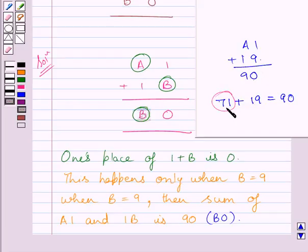90 minus 19 is 71. Now we can solve the puzzle as 71 plus 19 gives 90. And we get the value of A as 7.